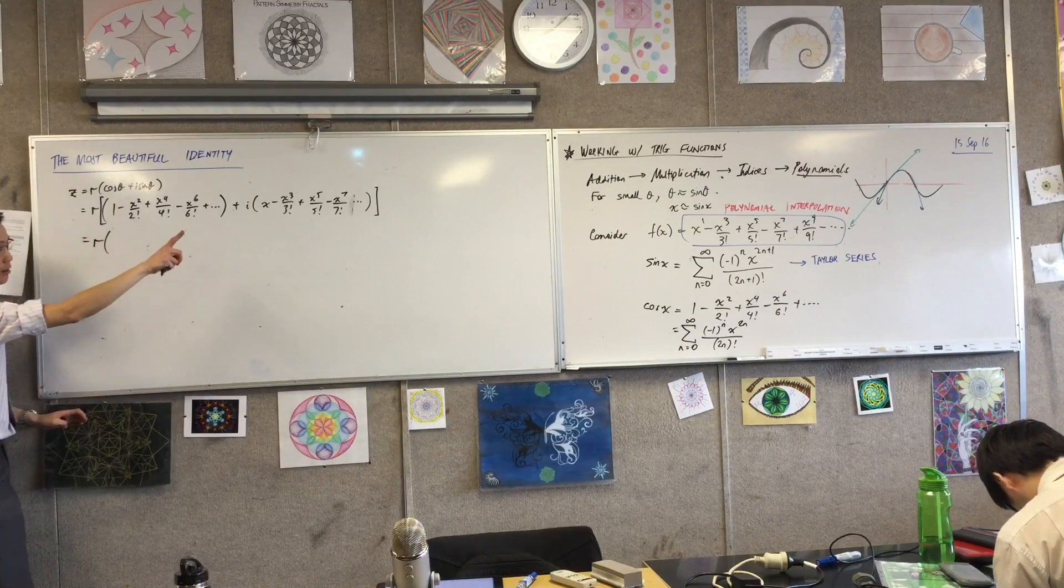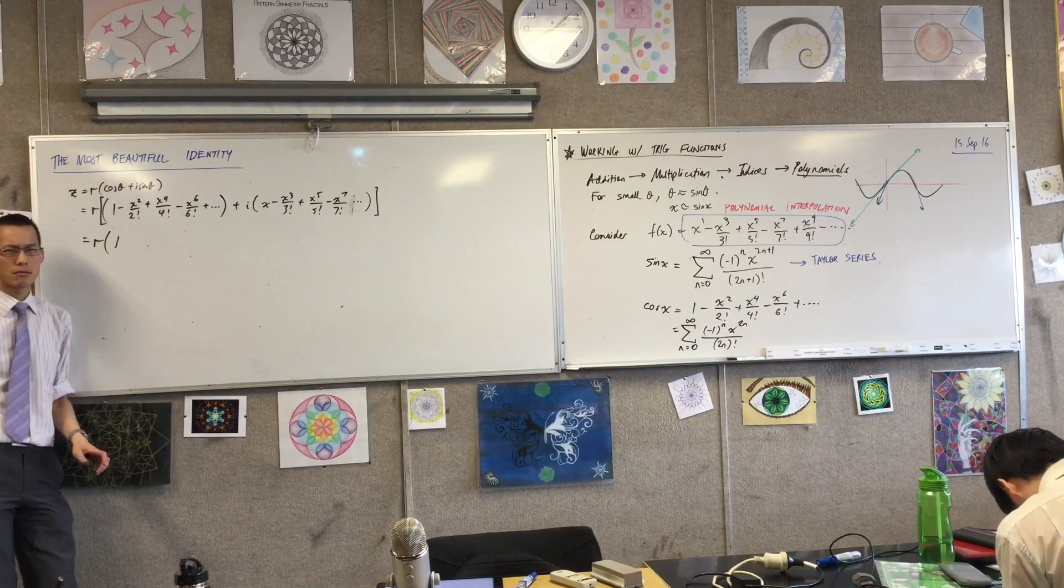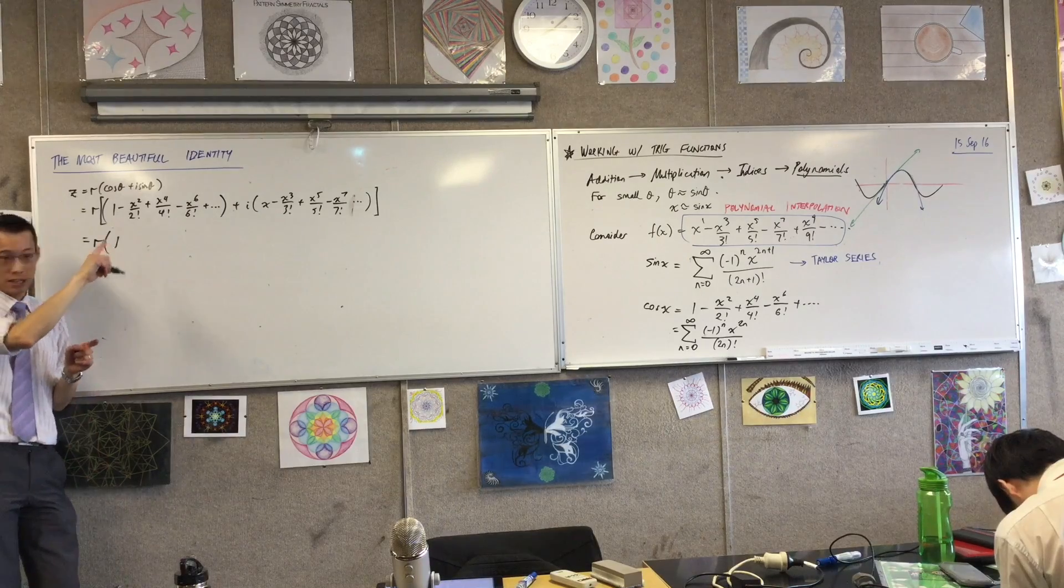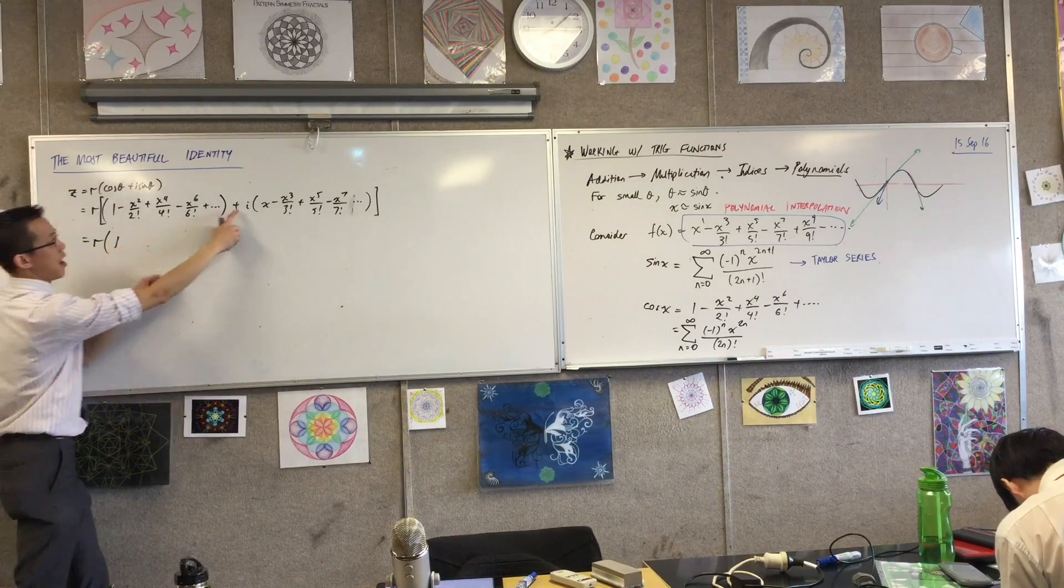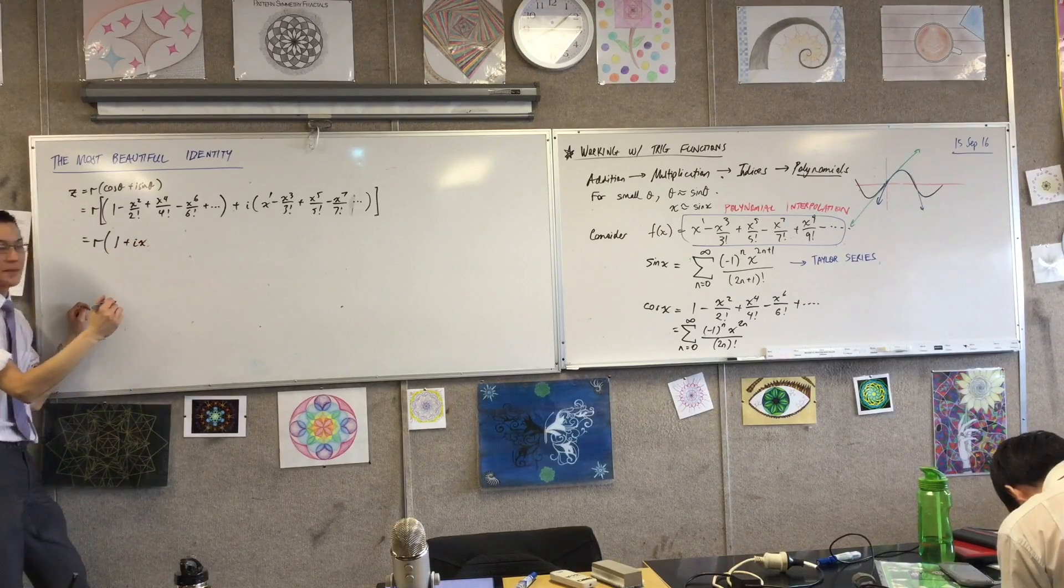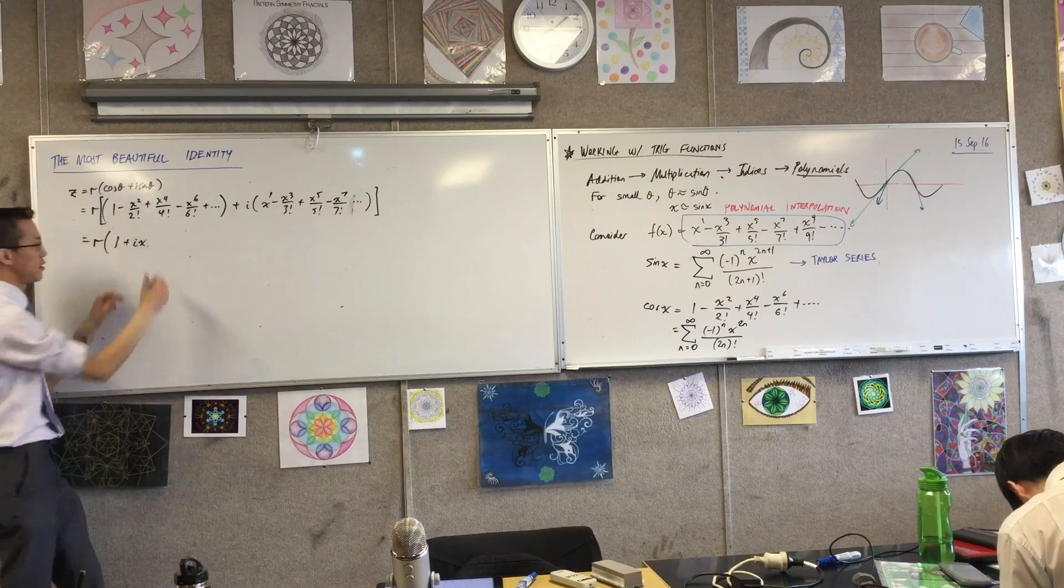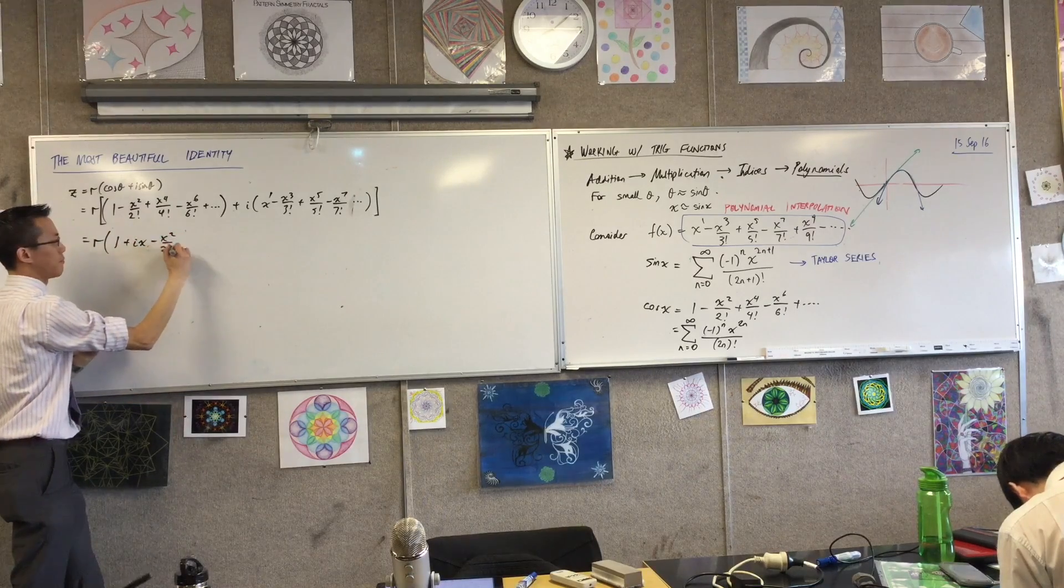The next term should be, going in terms of order, in degree rather, is ix. That's the x to the 1 term. Where's the x squared term? It's here. Minus.